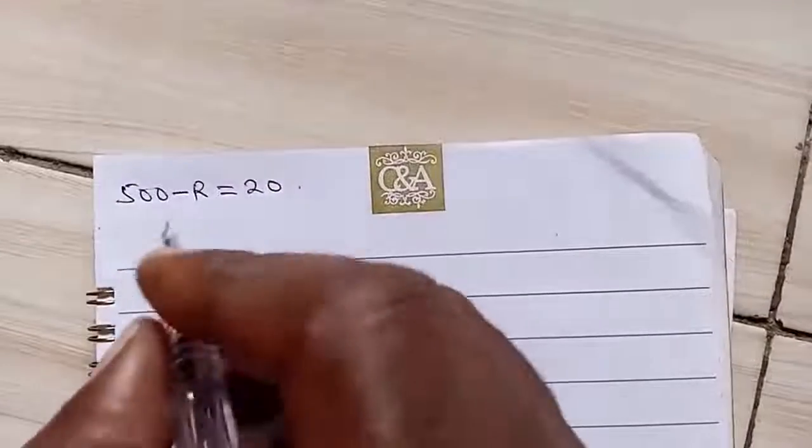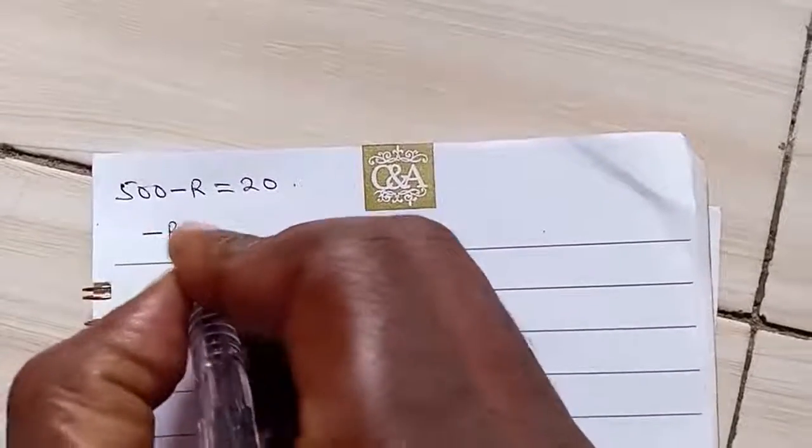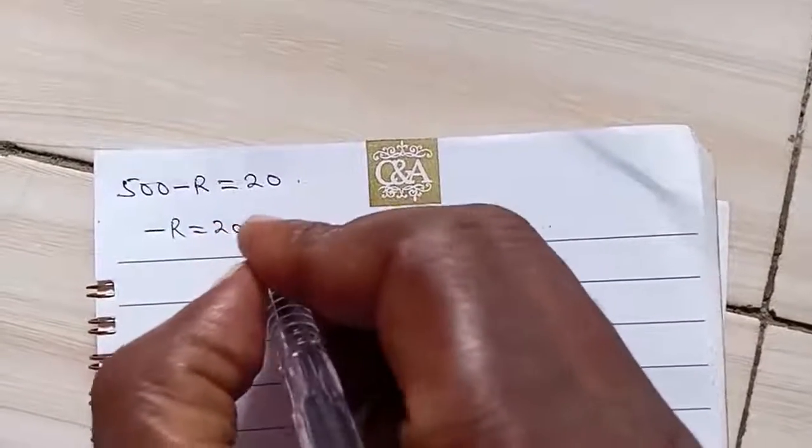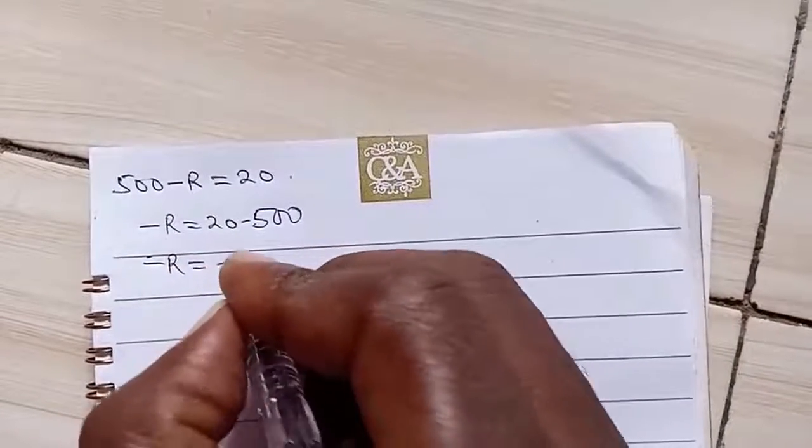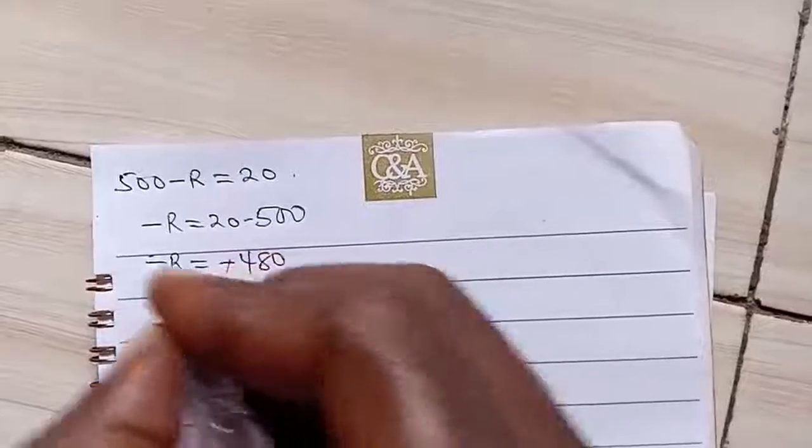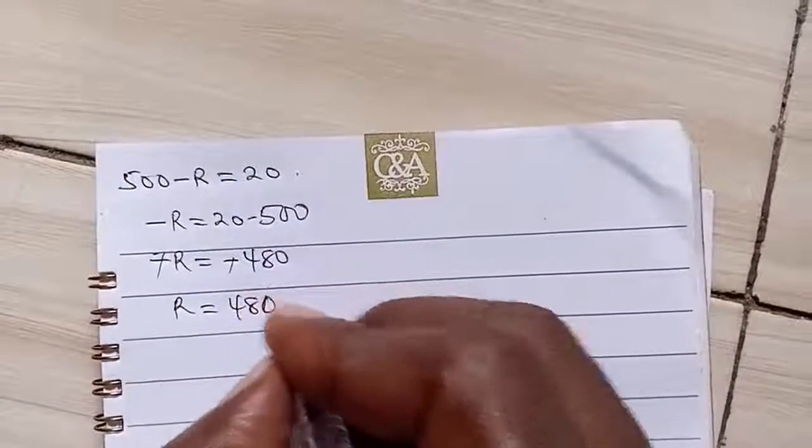So from there, if we move 500 to this place, it becomes minus. So minus R is equal to 20 minus 500. So minus R will be minus 480. So minus cancels out minus, R is 480 newton.